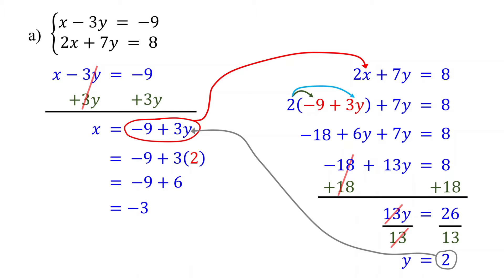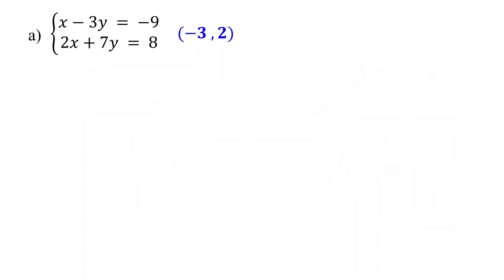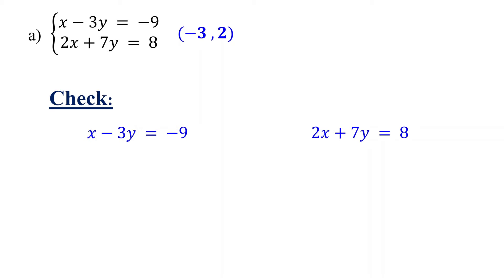Finally, write your solution as an ordered pair: negative 3 comma 2, with x equal to negative 3 and y equal to 2. If you were to plot the graphs of these two equations, the lines would intersect at the point negative 3 comma 2.